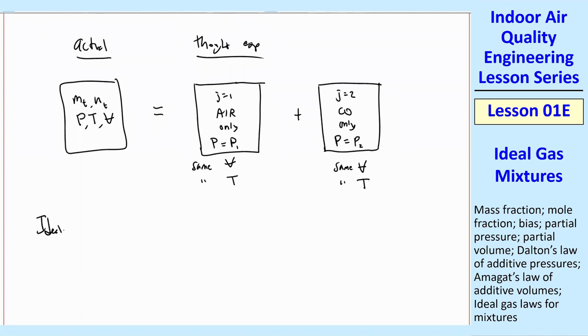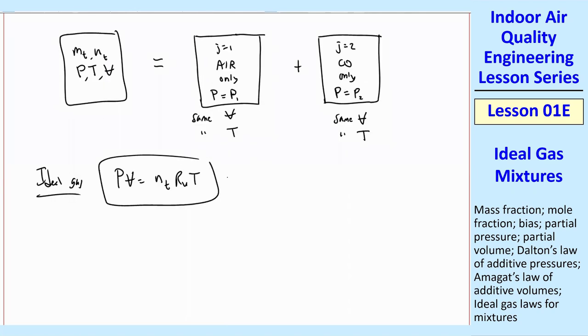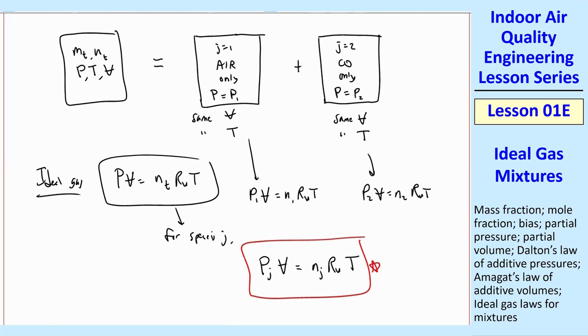So again, we can do an ideal gas relationship for the total P V equal N T R U T. But now here we can write this one as P1 V equal N 1 R U T. And write this one as P2 V equal N 2 R U T. So for species J, in general, P J V equal N J R U T. So that is ideal gas law in terms of partial pressures due to Dalton's law.